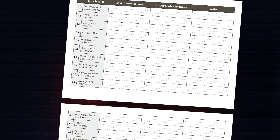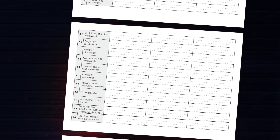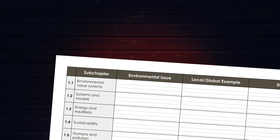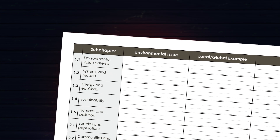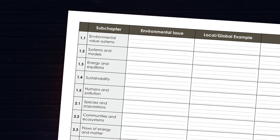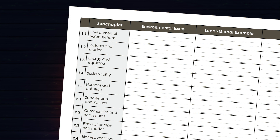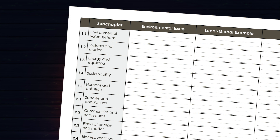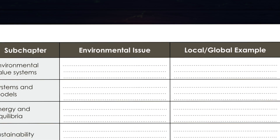First off, take a look at the list of topics on the course — there are 32 of them. Notice I'm looking at each subsection, which includes topics 1.1, 1.2, 1.3, rather than the broader chapters 1, 2, 3, etc. For each subsection, you need to choose an environmental issue that links with it.